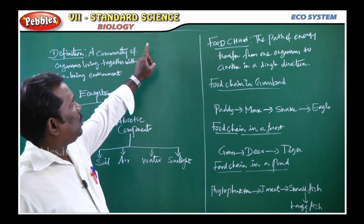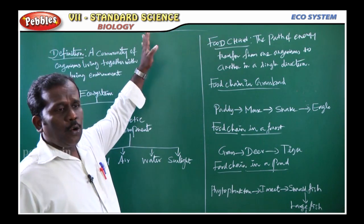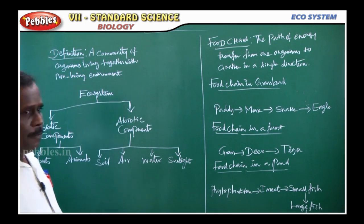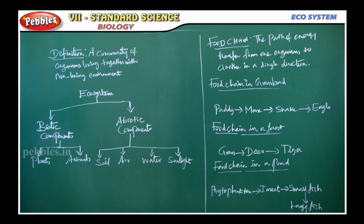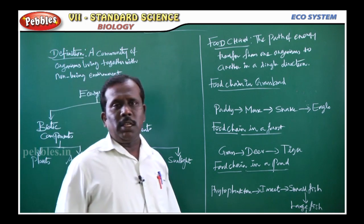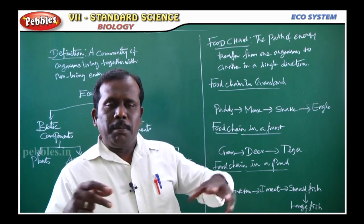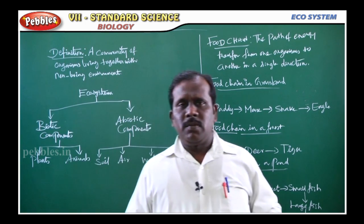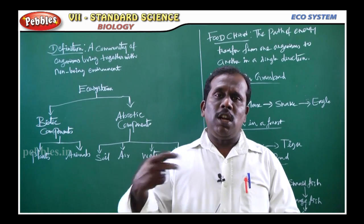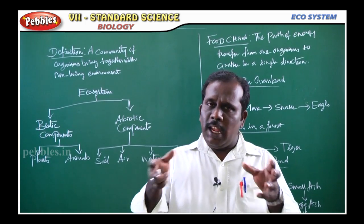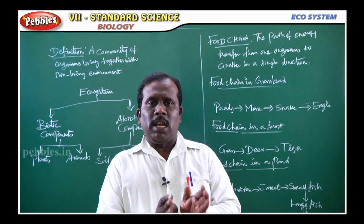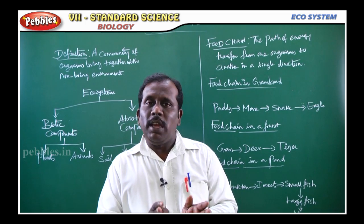Biological part — the first chapter is ecosystem. What is the definition of ecosystem? Ecosystem includes plants, animals, and non-living objects. It is all about a particular surrounding ecosystem.